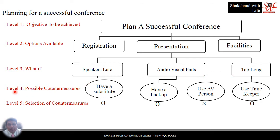At level 4, the possible countermeasures to check the unwanted consequences are identified. If speakers get late, we have a substitute. If audiovisual fails, then either we have a backup or we can use an AV person — an audiovisual person. And if the presentation goes too long, we can use a timekeeper to count the time for the presentation.